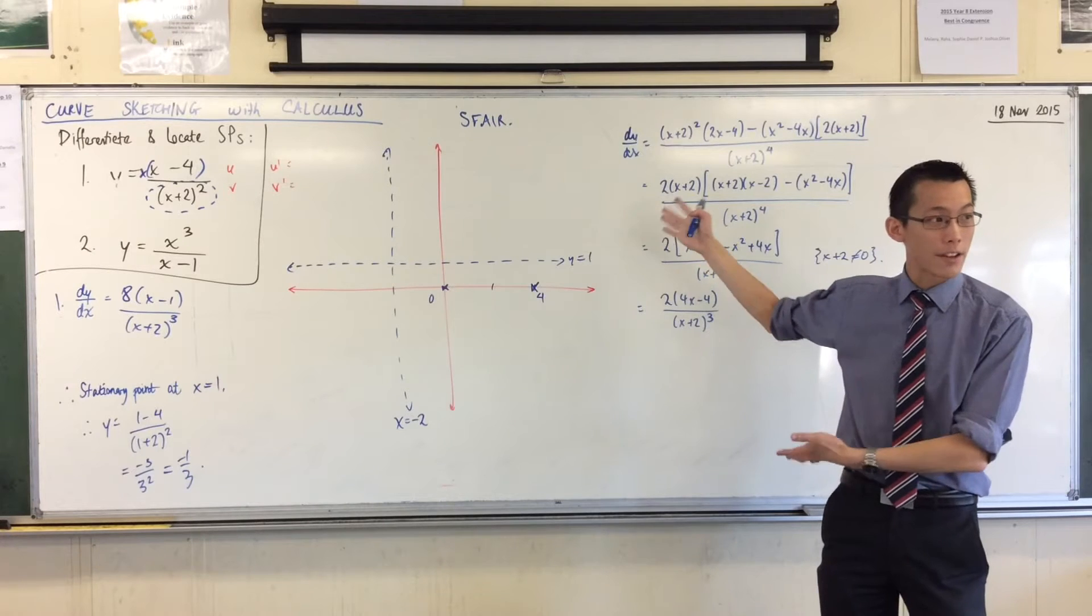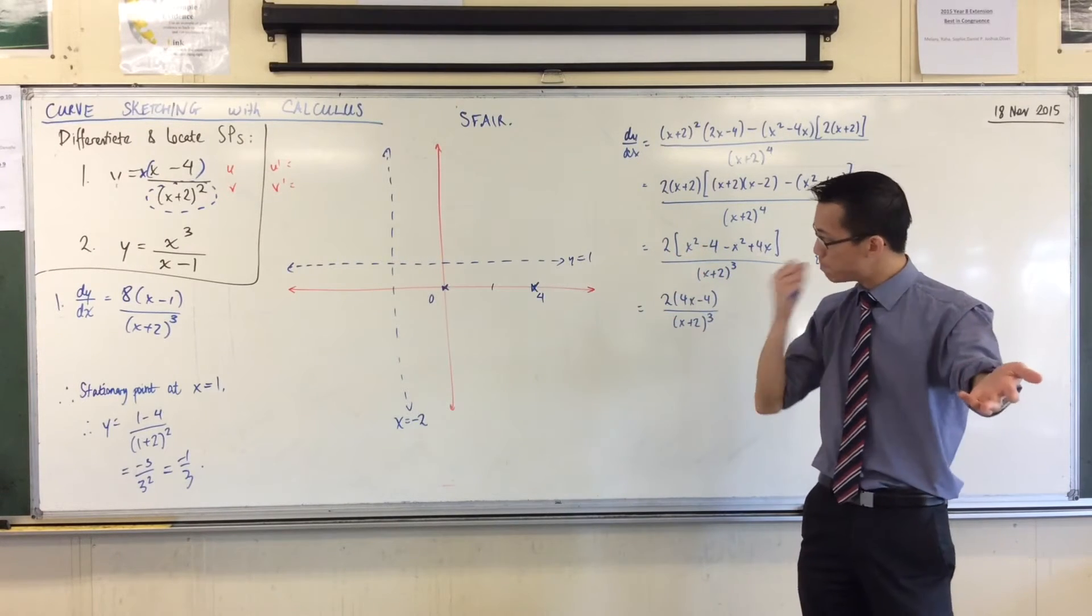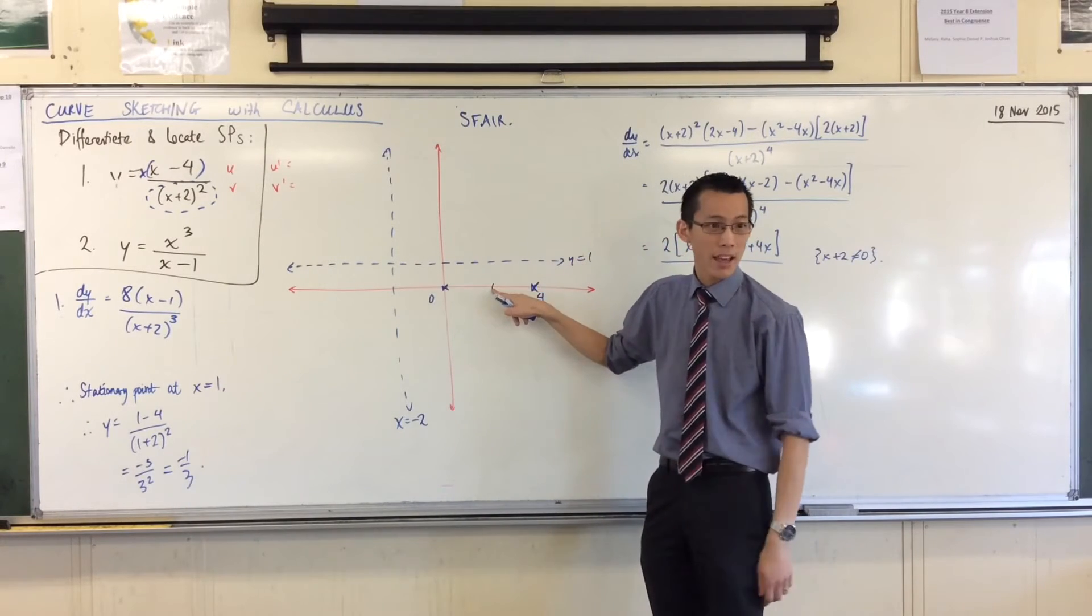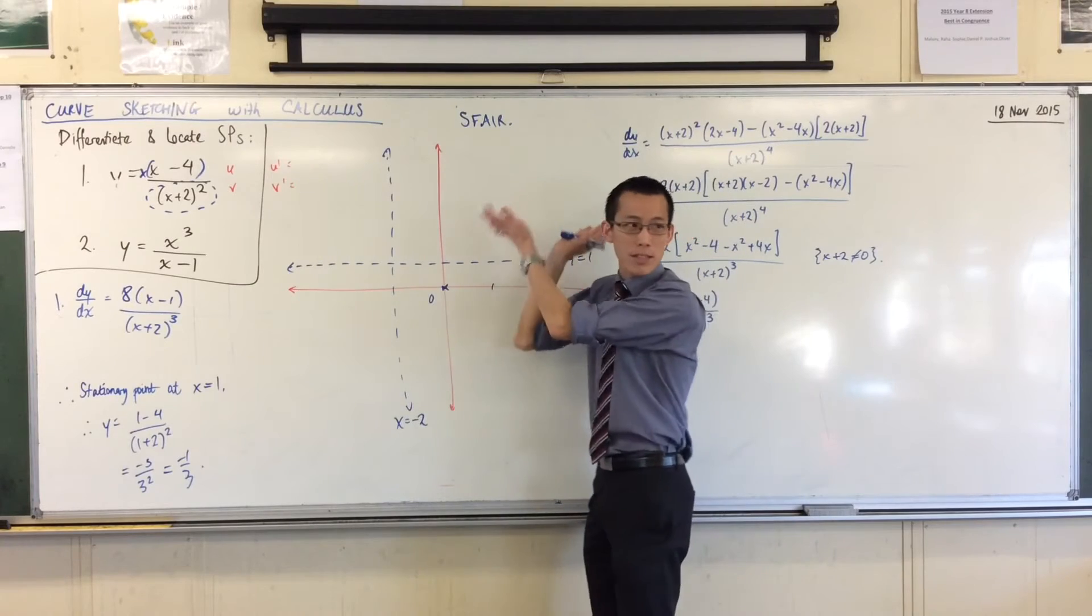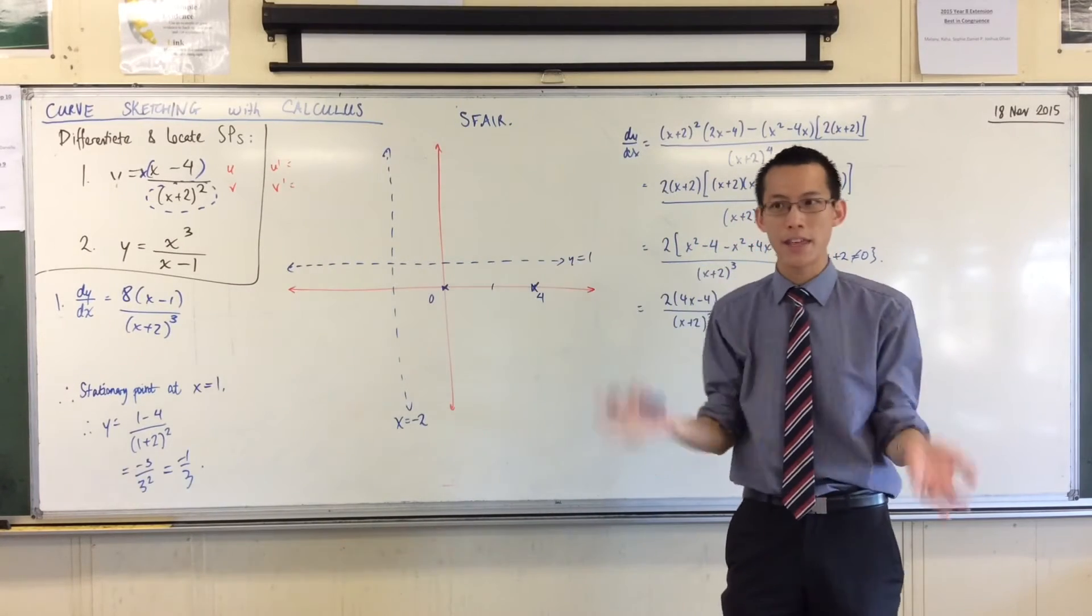think about what x plus 2 or square, think about what it looks like. Think about what kind of factor line I would draw for that. The answer is it's a parabola, right? It's not quite positive definite because it actually does hit the axis right there, okay? But everywhere else, it's positive.